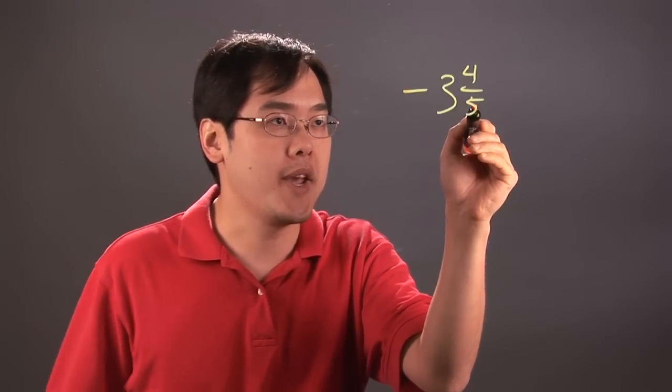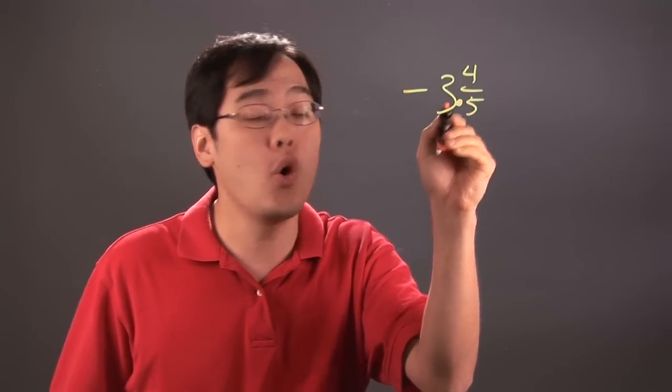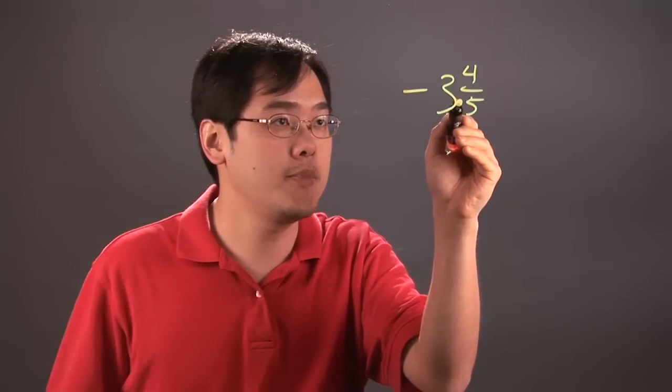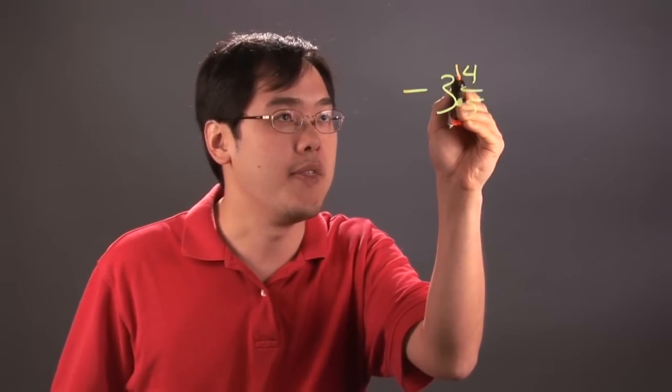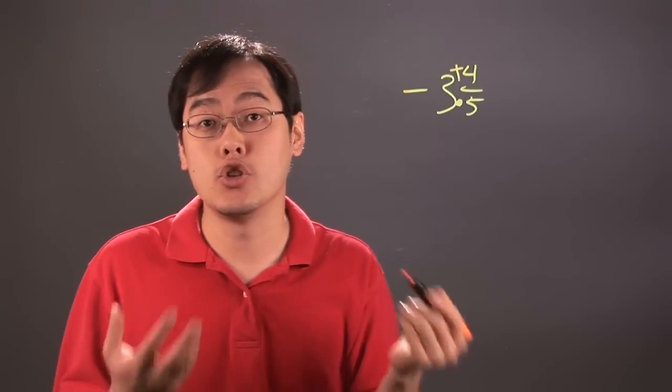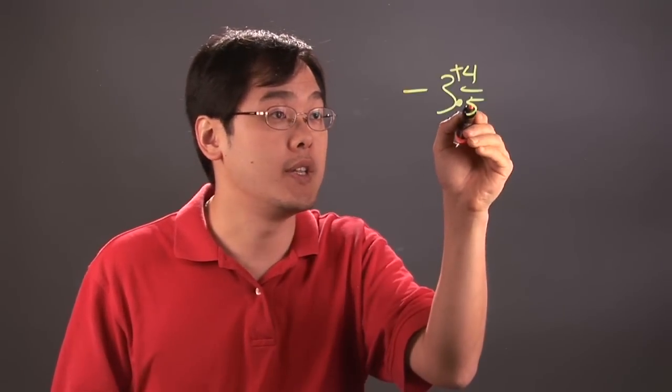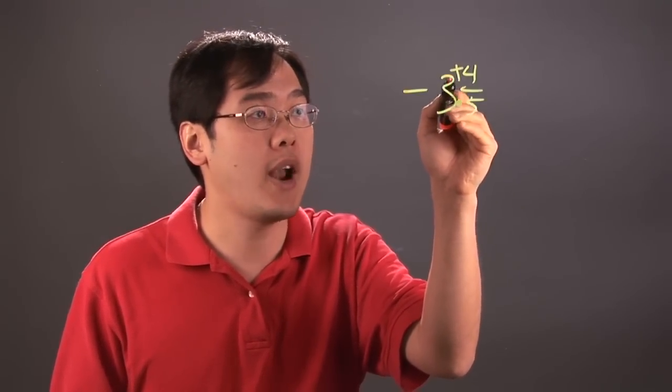You have to take the denominator and multiply by the whole number, always. Denominator times the whole number, so in this case, you have to do 5 times 3, and then after that, you add to the numerator. So the denominator times the whole number, add the numerator.